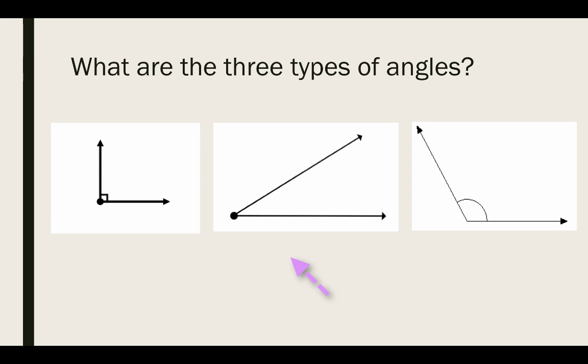In the middle we have an acute angle. An acute angle is less than a right angle so it would be between 0 degrees and 89 degrees.